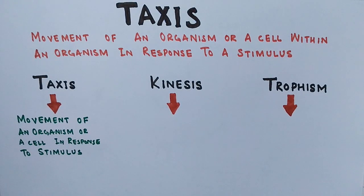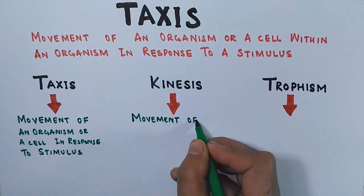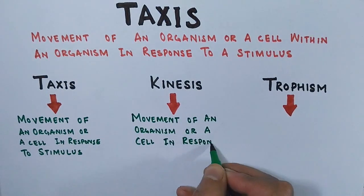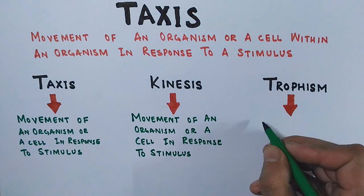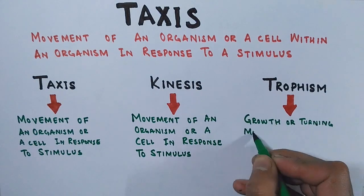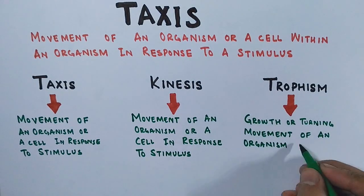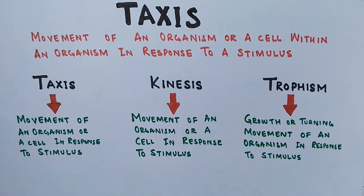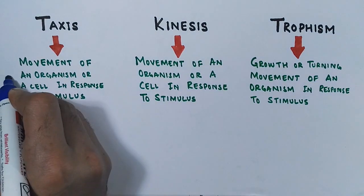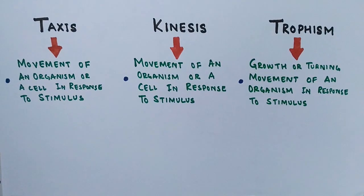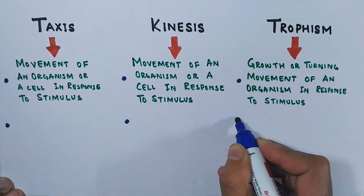Then we have tropism, which is not a movement like taxis or kinesis, but rather it is a growth or turning movement of an organism in response to a stimulus. It can also be a turning movement of a part of an organism. So tropism is a little bit different from taxis and kinesis, but taxis and kinesis are closely related.